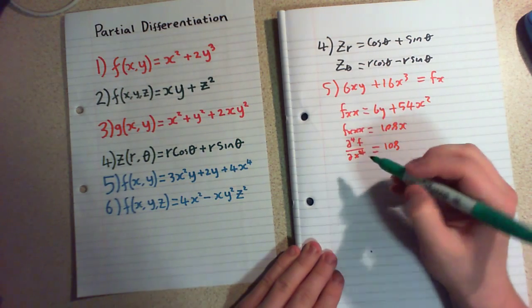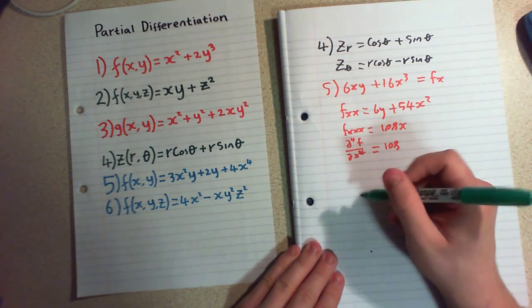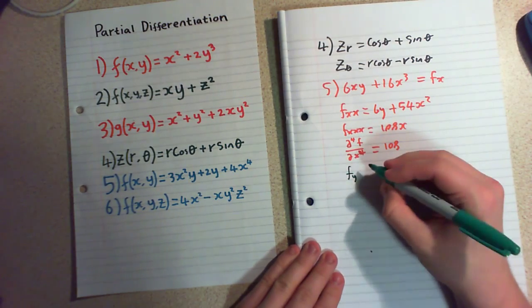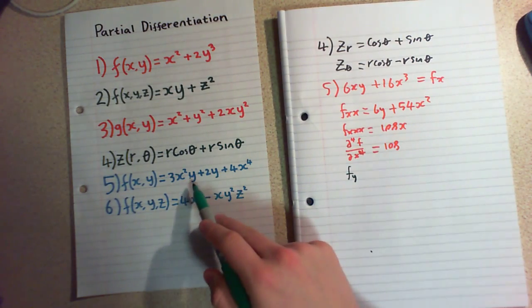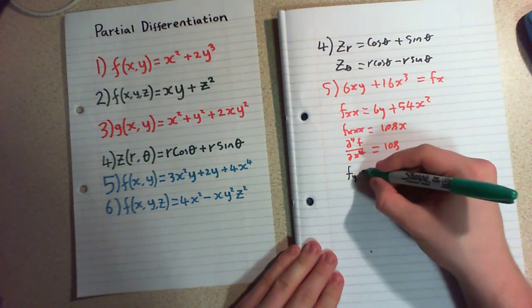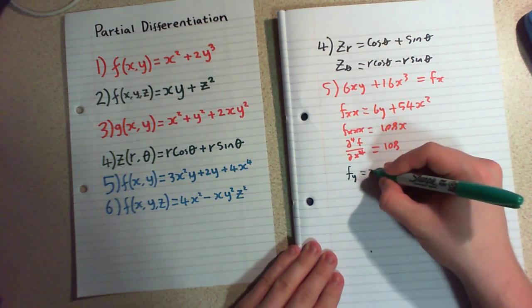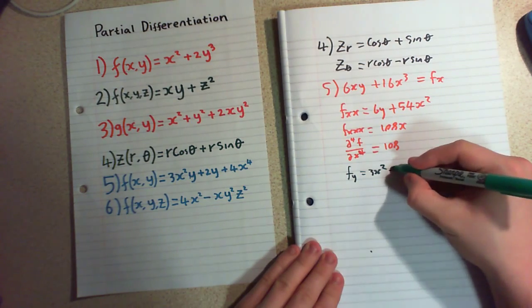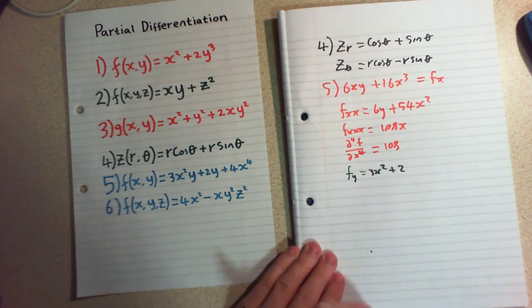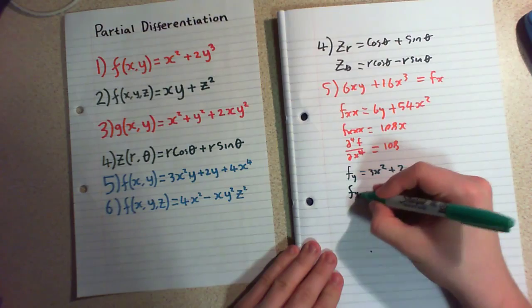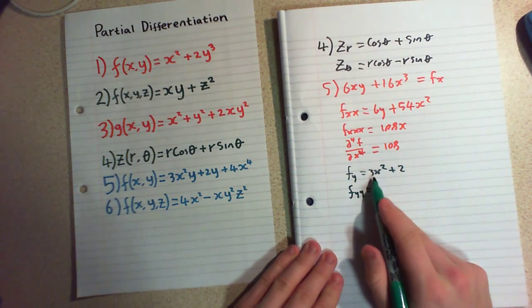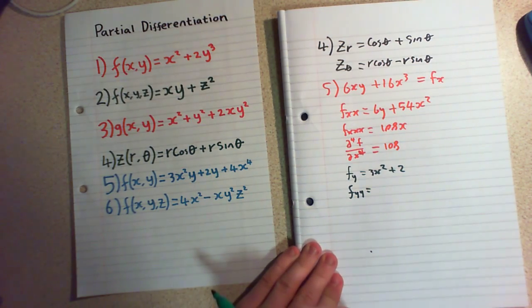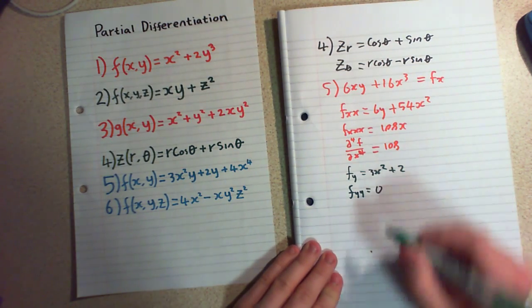So now I'm going to do it with respect to y. And at this point our y vanishes, I'm left with 3x as a constant, 3x² as a constant, our y vanishes there leaving us 2, and this whole term disappears there. f_yy twice then. This is a constant and this is a constant because we've only got y to the power of one in the original function. So this gives us zero.